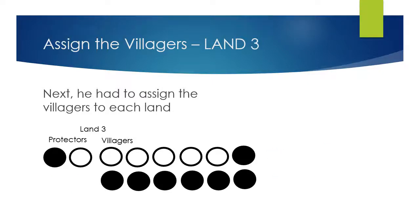Next we had to do land 3. Here we have the protectors of 1 and 0. The villagers again start at binary 000001 and go all the way up to 1111111.